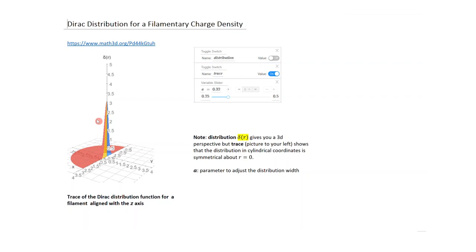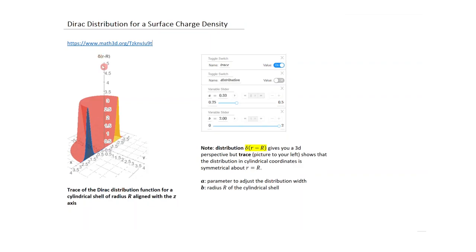This extends also to a surface charge. In that case, you have a ring whose radius is some value R, with a getting smaller causing the width to narrow and the peak to increase. Effectively, you get a value of zero except where r equals capital R — the radius of the ring — where the function blows up. The area under the curve still integrates correctly, and the parameter B increases the ring radius.